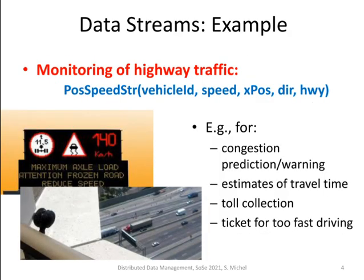For instance, we have here a relation, a streaming relation. We have here the vehicle ID, speed, the x-coordinate position, the direction, and the highway. This little example was also a benchmark proposed to evaluate such data stream systems. And the aim in this application is to do congestion warnings, congestion predictions, estimations of travel time, and so on.